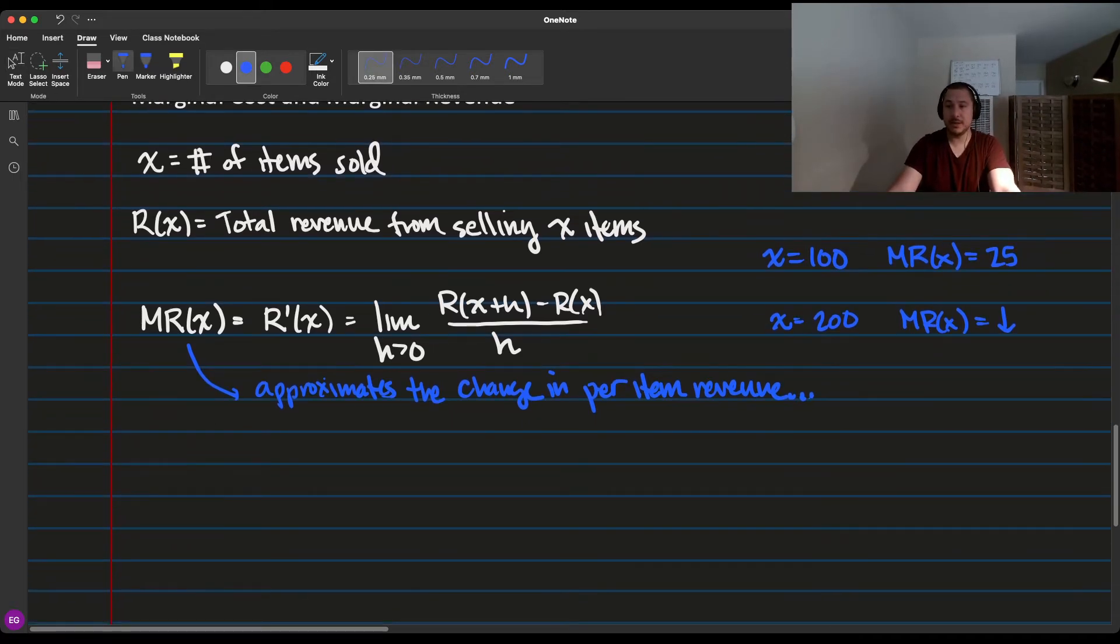So remember, marginal revenue equals the derivative. The marginal revenue of X is approximately equal to R(X+H) minus R(X) all divided by H, but we're going to multiply by H, so H times MR(X) approximately equals R(X+H) minus R(X).